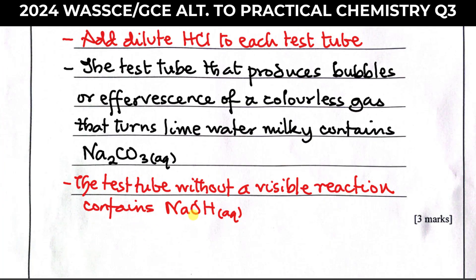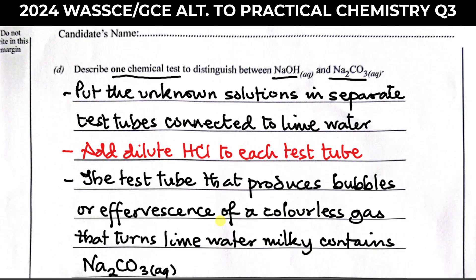The test tube without any visible reaction contains sodium hydroxide. Remember, you were given two solutions to identify, so you must speak about both of them. Don't just describe the sodium trioxocarbonate and stay silent about sodium hydroxide. Even though there is no visible reaction with sodium hydroxide, you need to state that there is no visible change or visible reaction.